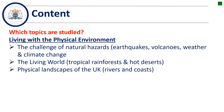So first of all, what topics do we study at GCSE Geography? The first section is living with the physical environment. We look at natural hazards such as earthquakes, volcanoes, weather and climate change. We look at the living world, focusing particularly on tropical rainforests and hot deserts, and we study physical landscapes of the UK — basically rivers and coastal environments.